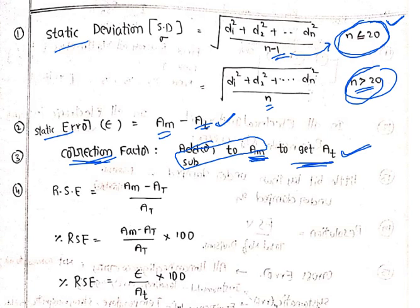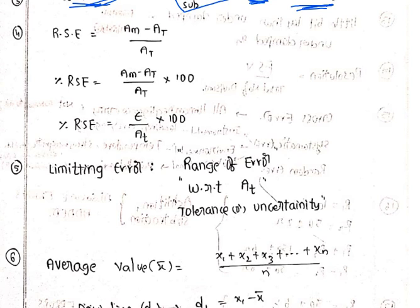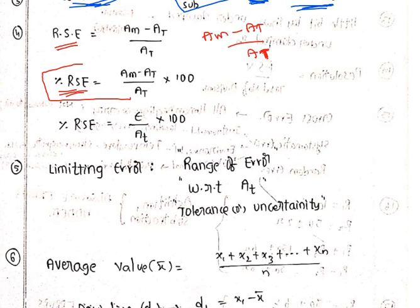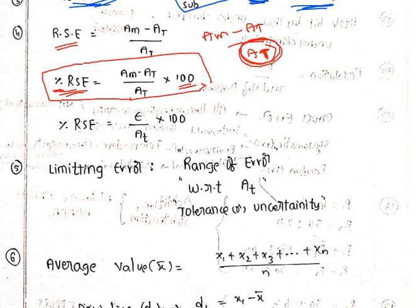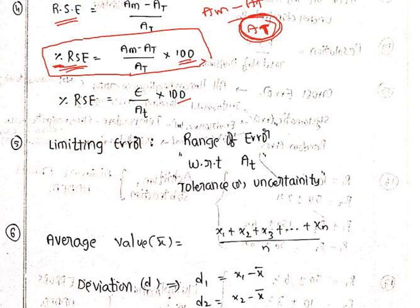Next: relative static error. Static error is measured value minus true value. When it is relative static error, we write it with respect to the true value: (Am − At) / At, that is, (measured value − true value) / true value. For percentage relative static error, the formula is: (measured value − true value) / true value × 100. We can also write this as E / At × 100, where E is the static error (measured value − true value).